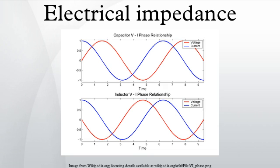Capacitor: for a capacitor, there is the relation i = C dv/dt. Considering the voltage signal to be V e^jωt, it follows that the ratio of AC voltage amplitude to AC current amplitude across a capacitor is 1/ωC, and that the AC voltage lags the AC current across a capacitor by 90 degrees. This result is commonly expressed in polar form as Z_C = 1/(jωC), or, by applying Euler's formula, as Z_C = (1/ωC)∠−90°.